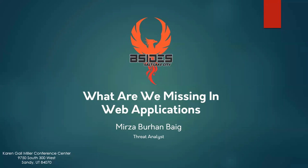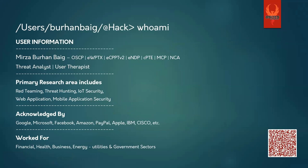A short introduction about myself: my name is Mirza Burhan Bake. I'm currently working as a threat analyst and red teamer at Riyadh Bank in Riyadh, Saudi Arabia — a semi-government bank. My career started in 2013 as a bug bounty hunter. I've been acknowledged by Google, Microsoft, Facebook, and other top companies. I'm OSCP certified with other certifications covering mobile and network security, and I've worked mostly in financial, health, business, and government sectors.